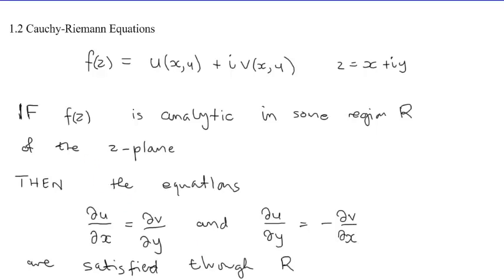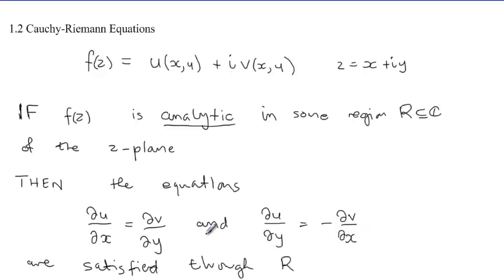Let's go over this theorem again. The theorem simply states that if a function f(z), defined on a region R which is a subset of the complex plane, is analytic, then these two Cauchy-Riemann equations will be satisfied. You must note that this is an AND — both equations are satisfied at the same time throughout the region R.